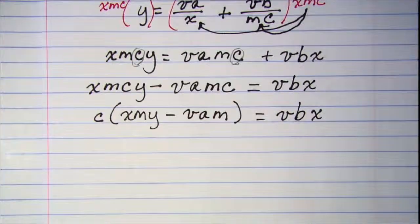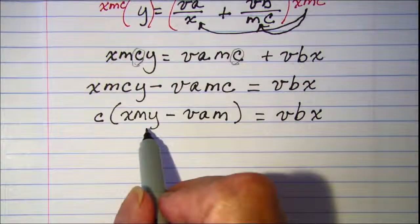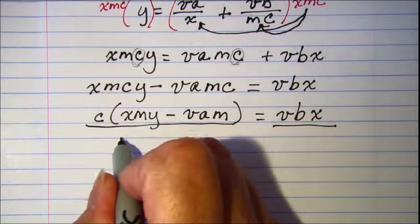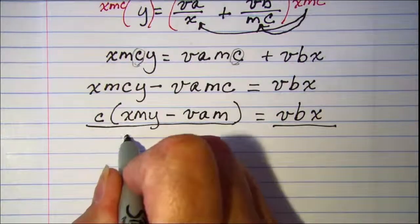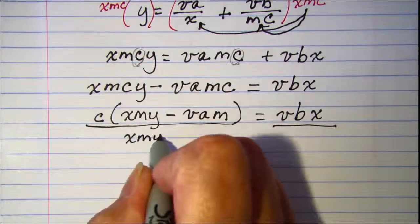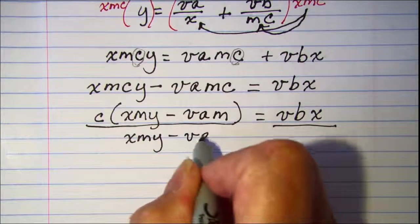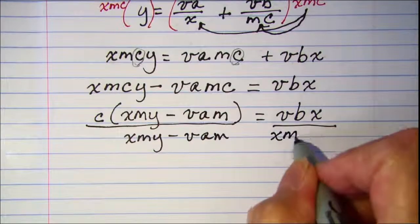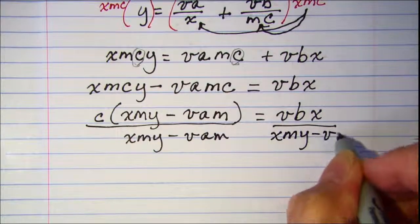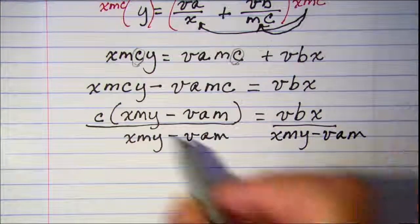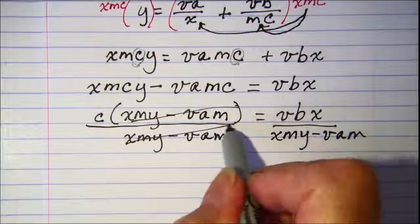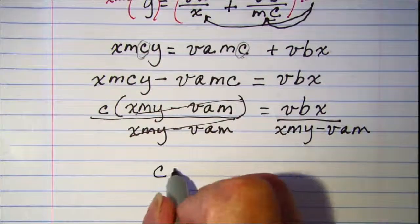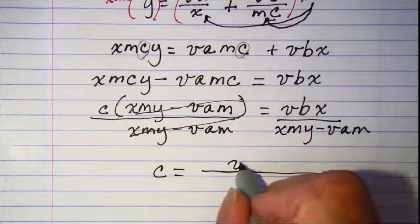The last step is to divide both sides by the coefficient of c to isolate it. I'll divide by xmy minus vam on both sides. This cancels.